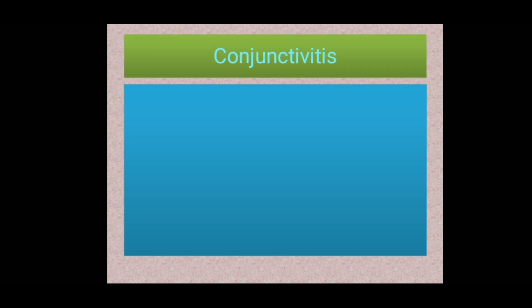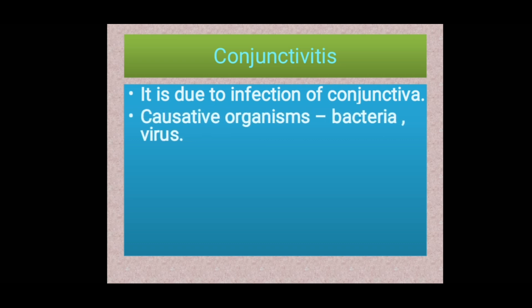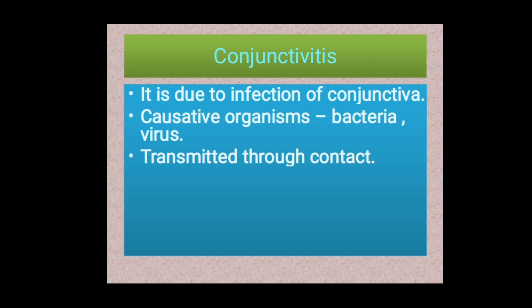The next disease is conjunctivitis — very common during summer — also called red eye. It is due to infection of the conjunctiva, and the major causative organisms are bacteria and virus. It is transmitted through contact via unhygienic habits and surroundings. During summer our body water content is less, so we need to drink more water to maintain water balance and support secretion of fluids like tears and mucus produced by the conjunctiva.